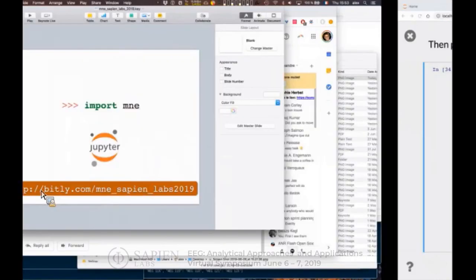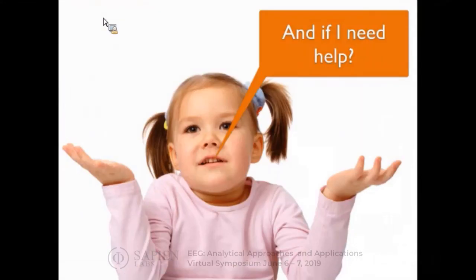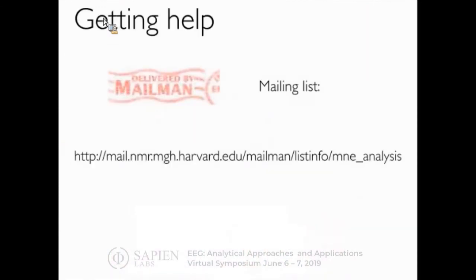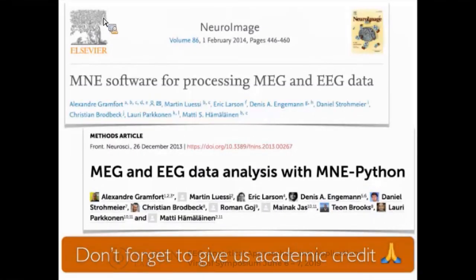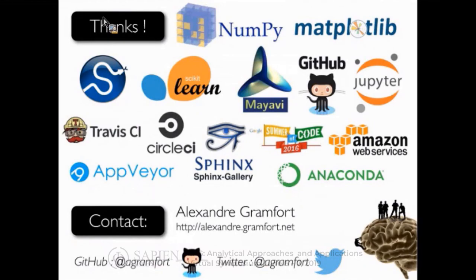This is it for the demo. I'd like to conclude very briefly by saying that if you need help using MNE, we have a mailing list. This is the best way to ask for help. MNE is the work of many people. This is the name of the different people that have submitted code to MNE since the beginning. I'd like to highlight the paper that we wrote in order to explain what MNE does and also allow us as researchers to get academic credit for the work we're doing with MNE. Thank you very much and I'll be happy to answer your questions if you have any.